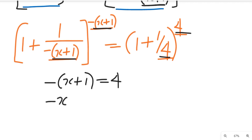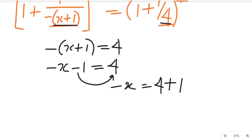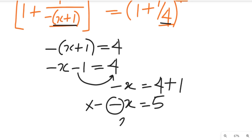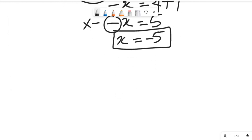You can see that this denominator is almost equivalent to four, and the numerator is also equivalent. So we equate the exponents. Taking one of the exponents, negative x plus one equals four. Simplifying: negative x minus one equals four, so negative x equals four plus one, giving us negative x equals five. Multiplying both sides by negative one gives us x equals negative five.